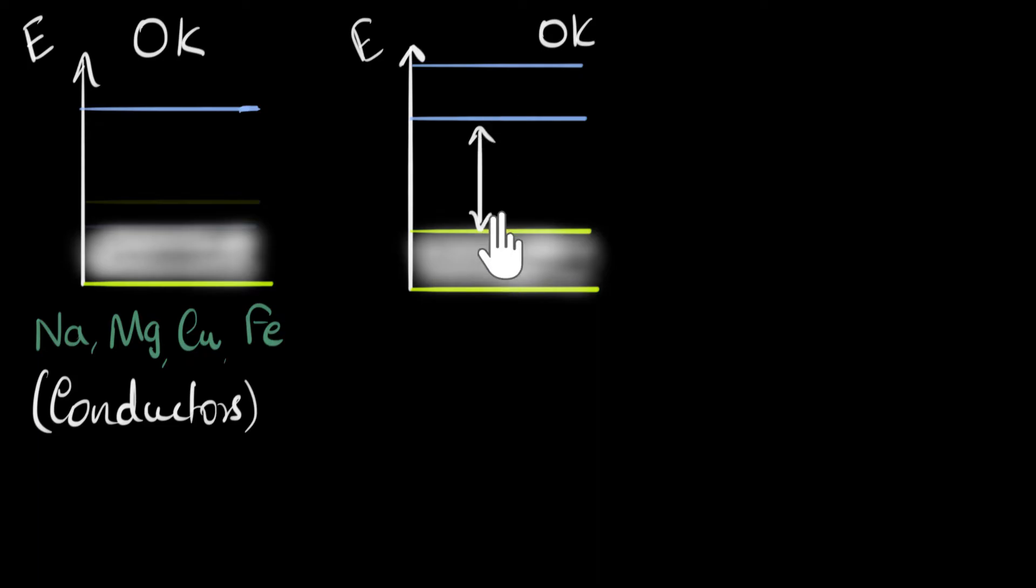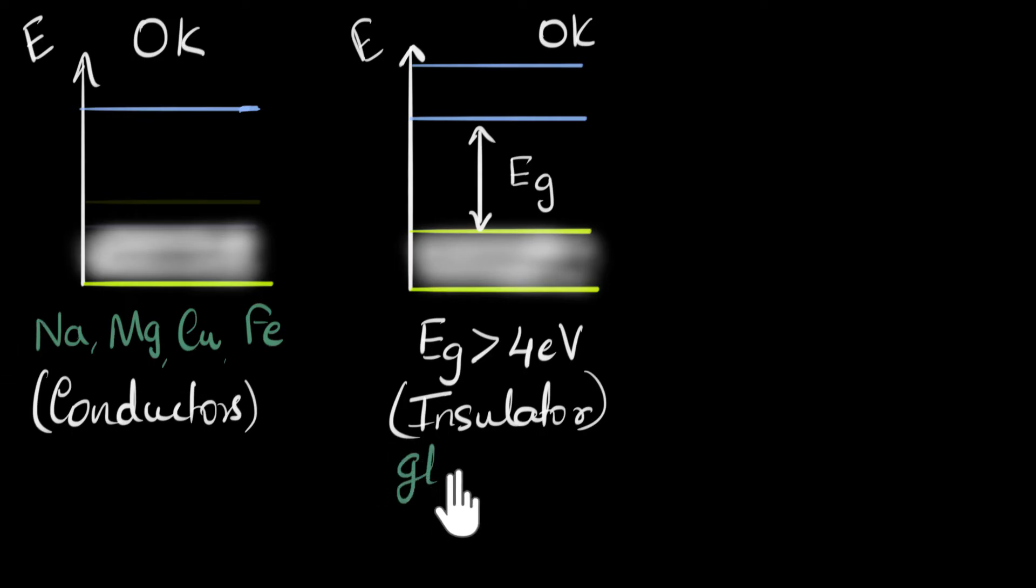And this energy gap is called the band gap. It's also called the forbidden energy levels because electrons are forbidden to be anywhere over here. Usually we call it Eg. And if this band gap, Eg, if it is somewhat more than four electron volts—this is not a very strict thing, sometimes if you write five electron volts or four—but if it's sort of like more than four electron volts, then we'll call this an insulator. So this will be the example for glass or diamond. They're excellent insulators.